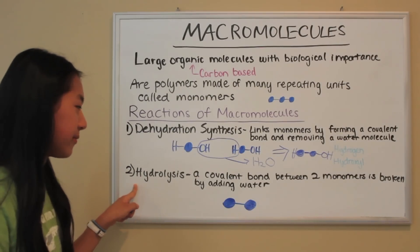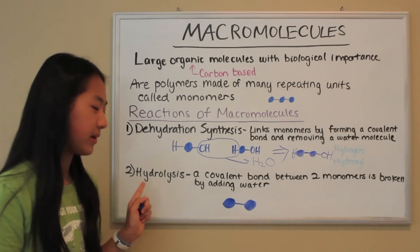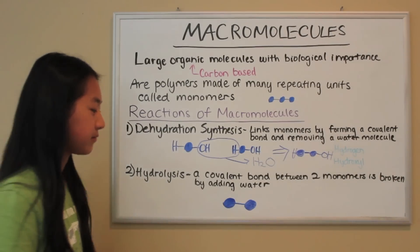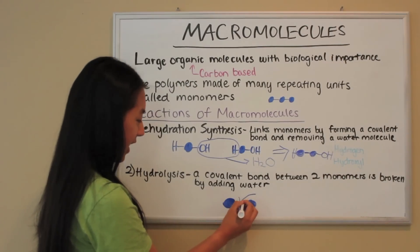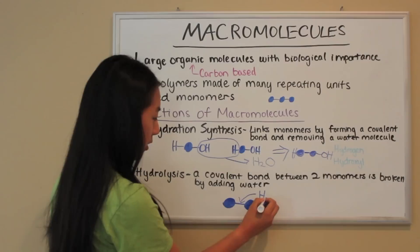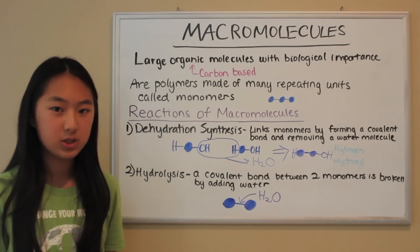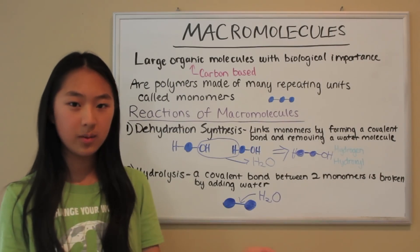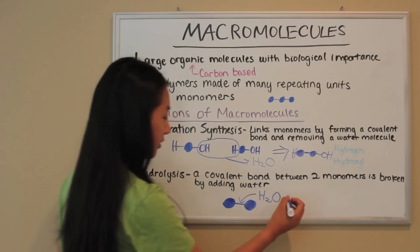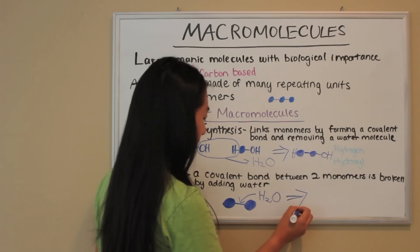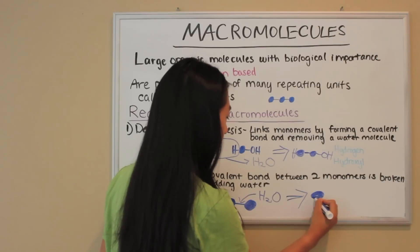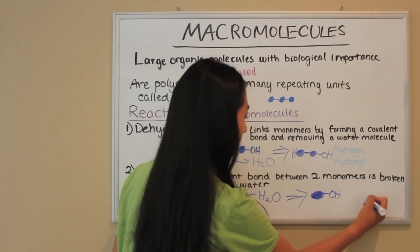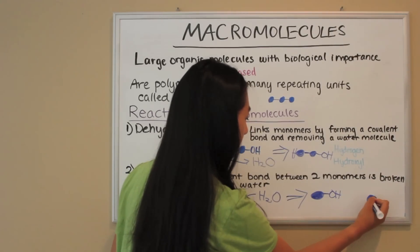In hydrolysis, a covalent bond between two monomers is broken by adding water. Here are two monomers linked by a covalent bond. In this reaction, water is added into the covalent bond, breaking it apart. The water splits into a hydroxyl group and a hydrogen — the hydroxyl group goes with one monomer and the hydrogen goes with the other monomer, so it would look something like this: one monomer bonded to the hydroxyl group and the other monomer bonded to the hydrogen.